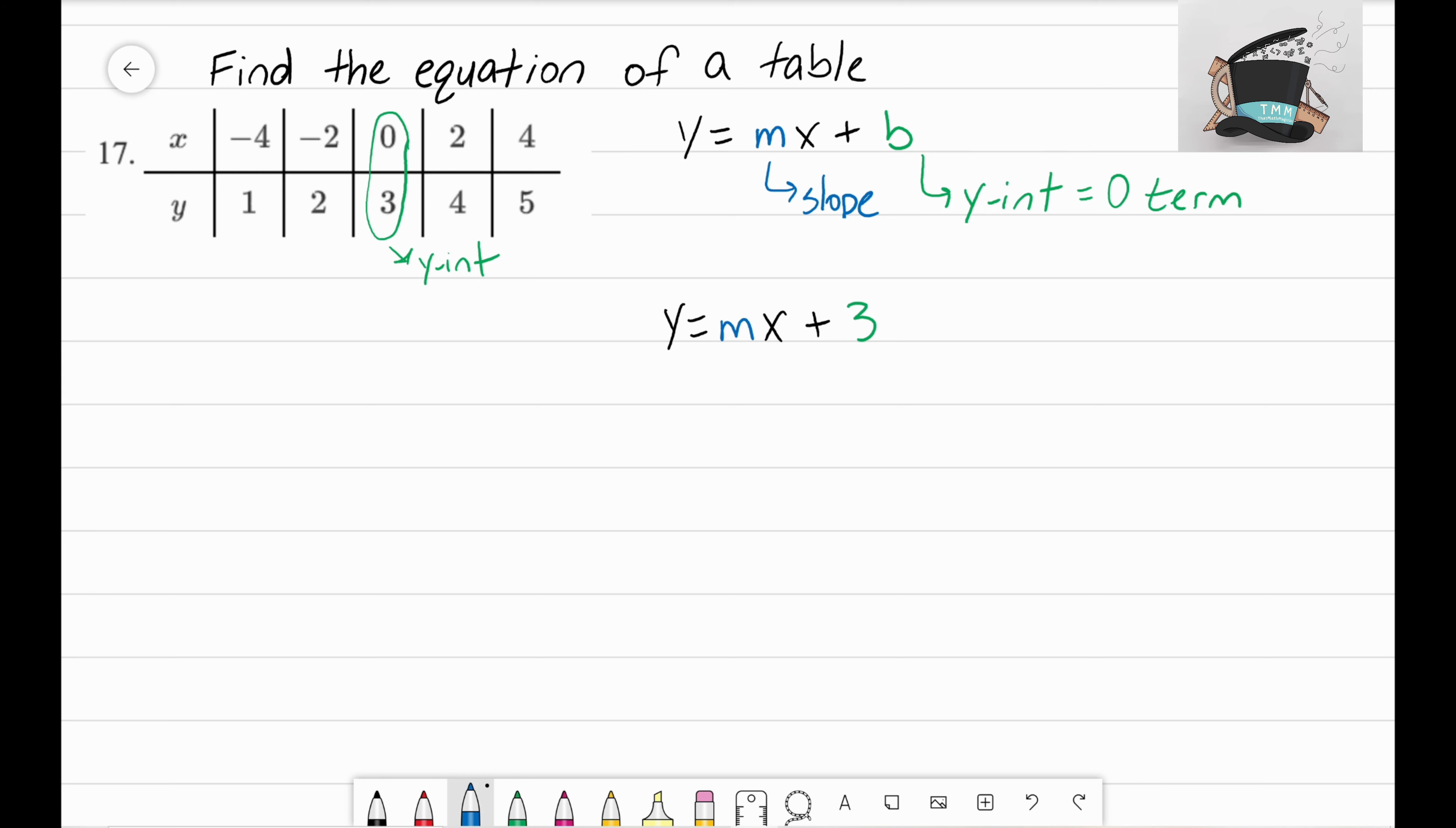To find out what our slope is, we're going to use the same process that we used last time, and that is this equation: m equals y2 minus y1 over x2 minus x1. All that's really talking about is what is the change in y over the change in x.